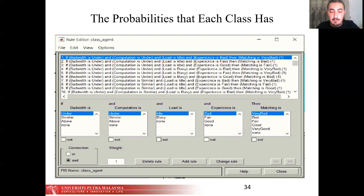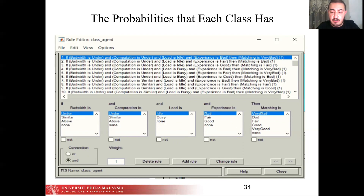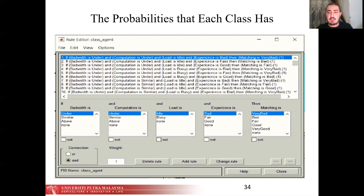There are 54 possible rules that can be exploited to give customers their best conditions. These 54 possibilities come from the four inputs: bandwidth, consumption, load, and experience. Each input has three membership values except the load input, which has only two. So: bandwidth (under/similar/above) × consumption (under/similar/above) × load (idle/busy: 2 values) × experience (bad/good/best: 3 values) = 54 combinations. For example, if bandwidth is similar, consumption is under, load is idle, and experience is bad, the matching result is evaluated accordingly.